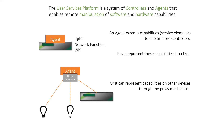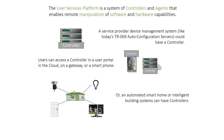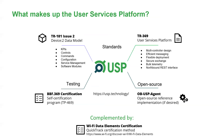So how does it work? A USP agent exposes capabilities — which we call service elements, defined in TR181 — to one or more controllers. It can represent those capabilities directly, or represent capabilities on other devices through the proxy mechanism. Controllers have many different use cases: one is like today's TR69 auto-configuration server as part of a device management system. A user can also access an agent remotely by having a controller on a smartphone, either in the cloud or through a cloud controller system. And it can also be used to build an automated smart home environment.